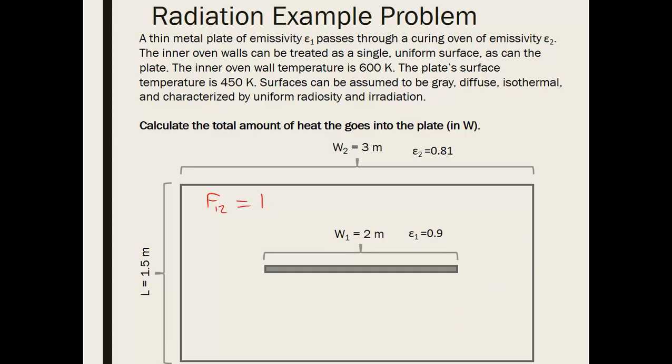That means 100% of any radiation being emitted or reflected off of this plate is going to be intercepted by these inner oven walls. So now we need to figure out the inverse of that. So what percentage of the radiation leaving the surface of the inner oven walls is going to hit the plate.